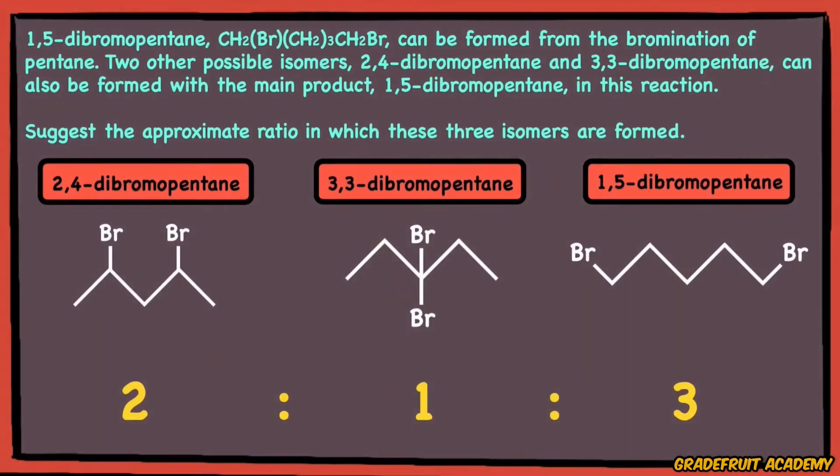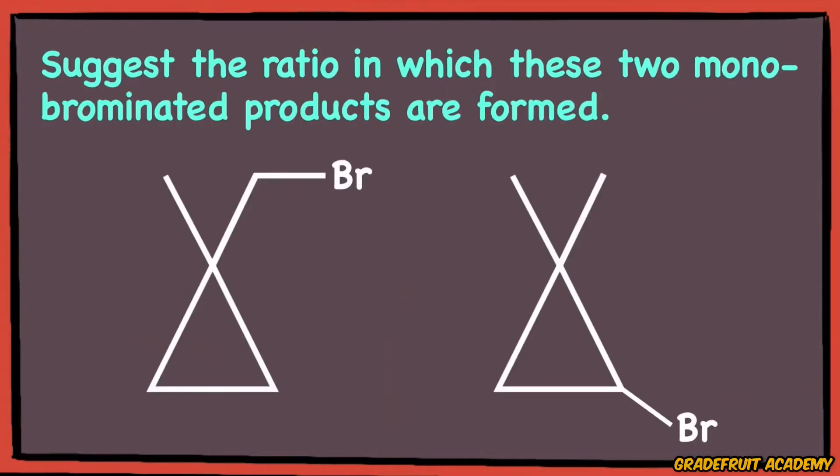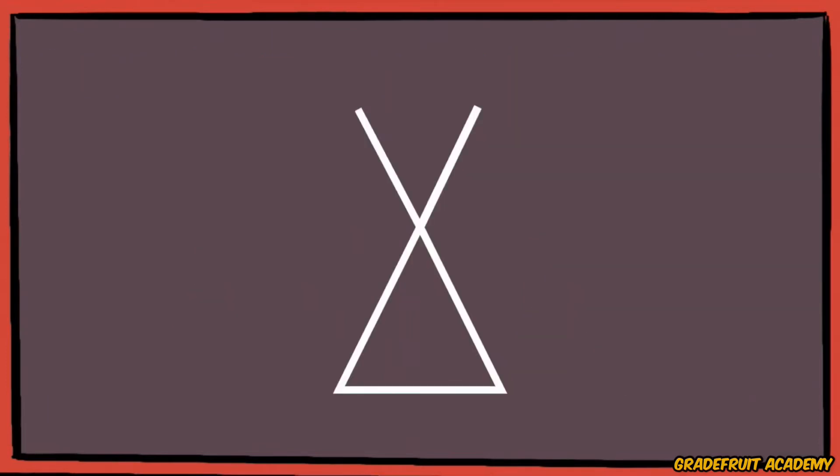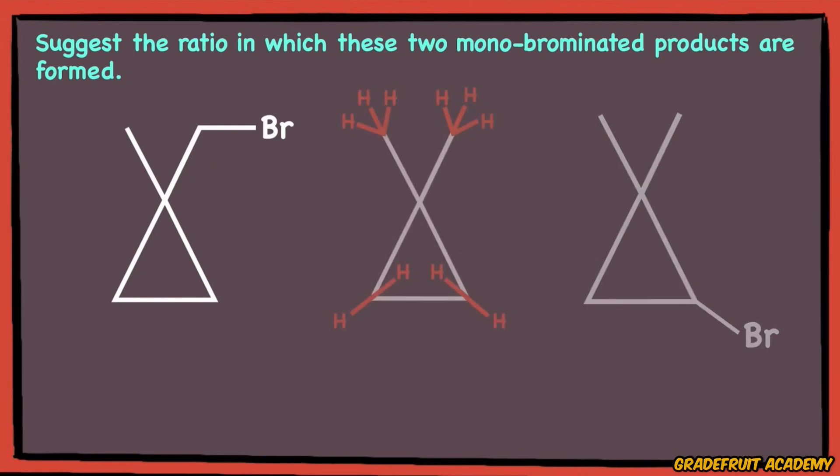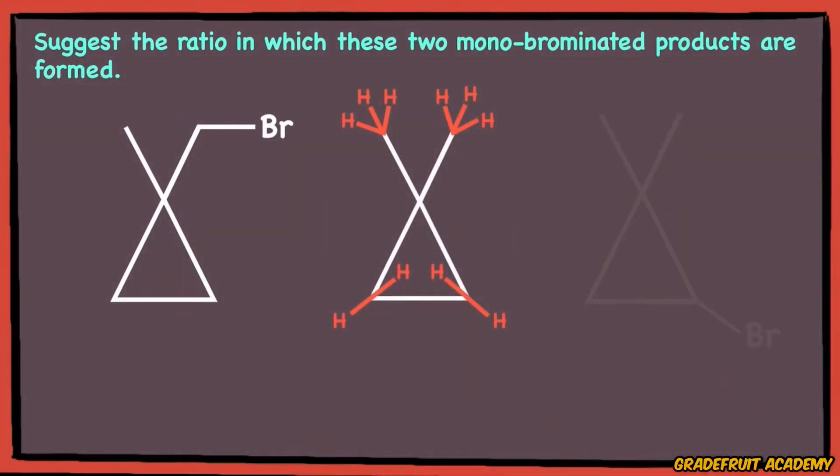Still with me? Alright, let's take a look at the next question. So we know that before these compounds were substituted with bromine, there were originally 10 hydrogen atoms attached to it. So for the compound on the left-hand side, in order for the bromine atom to be attached here, the bromine atom has 1, 2 and 3 out of the 10 hydrogen atoms to choose from, right?